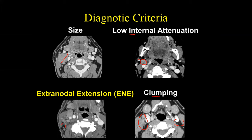Extranodal extension is the extension of lymph node metastasis outside the confines of the lymph node capsule. We can see this radiologically, but in the updated AJCC staging system, extranodal extension is really a clinical diagnosis and not a radiological diagnosis — and we'll have a lot to say about that.